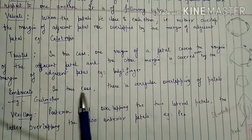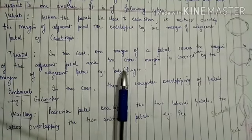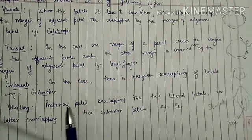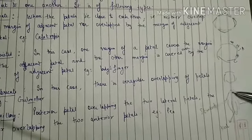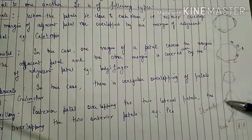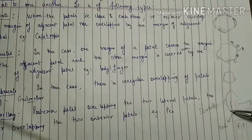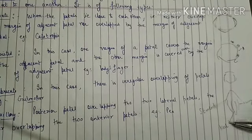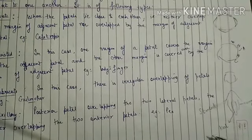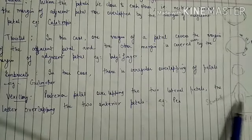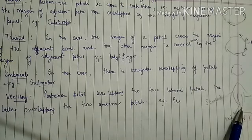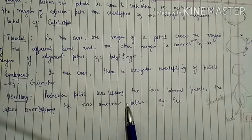In imbricate aestivation, there is irregular overlapping of petals with no regular pattern. In vexillary aestivation, the two posterior petals overlap the two lateral petals (called wings), and the two lateral petals in turn enclose the two anterior innermost petals called the keel. This vexillary aestivation is characteristic of papilionaceous flowers.